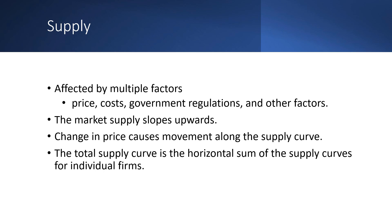Supply: The quantity supplied by a firm is affected by multiple factors including price, costs, government regulations, and other factors. While the market supply curve doesn't have to slope upwards, it often does. A change in price results in a movement along the supply curve; however, a change in the price of an input or government regulation will shift the supply curve. The total supply curve is the horizontal sum of the supply curves for individual firms.